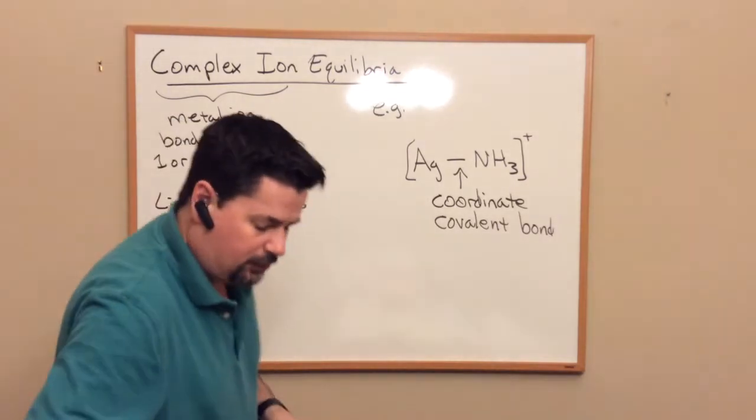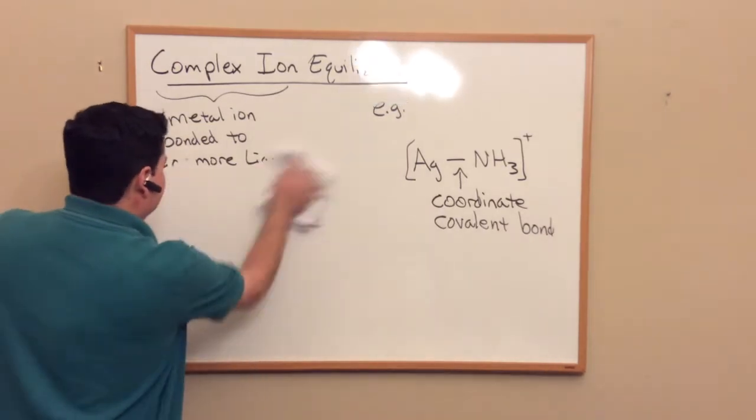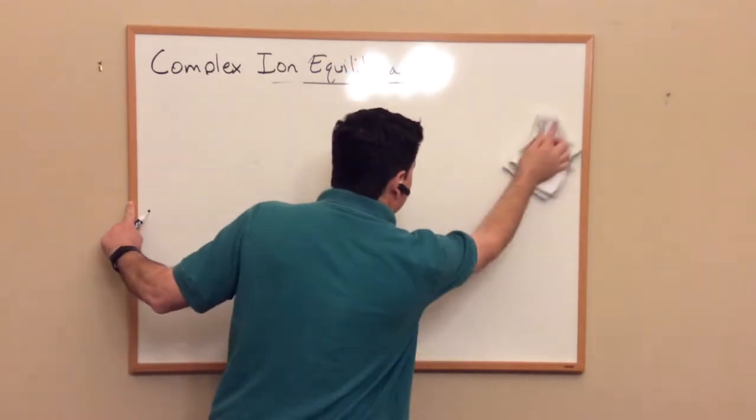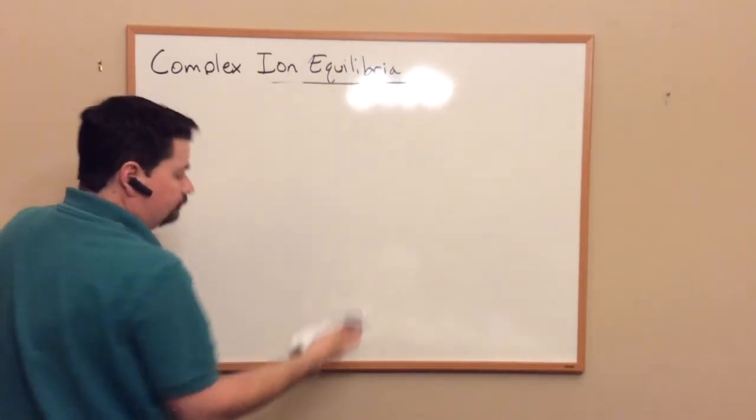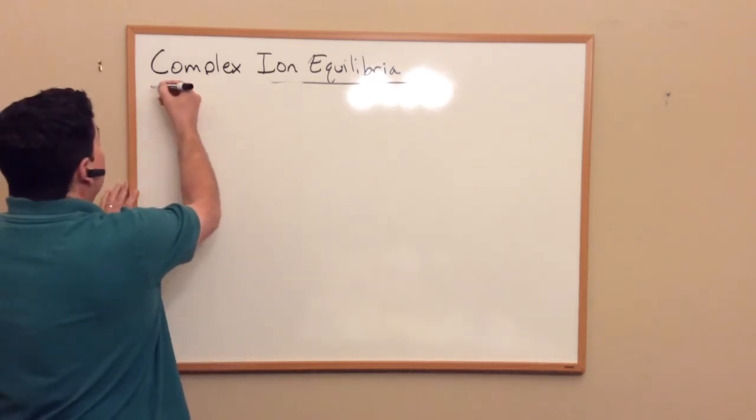These complex ions, of course, have their own equilibria associated with them. We've seen a lot of equilibria so far this semester. There'll be more, don't worry. When we talk about electrochemistry, we'll revisit delta G and K. So let's take a look at what goes on with the formation of these complex ions. I'm going to step back just so you can pause and jot this down if you want.